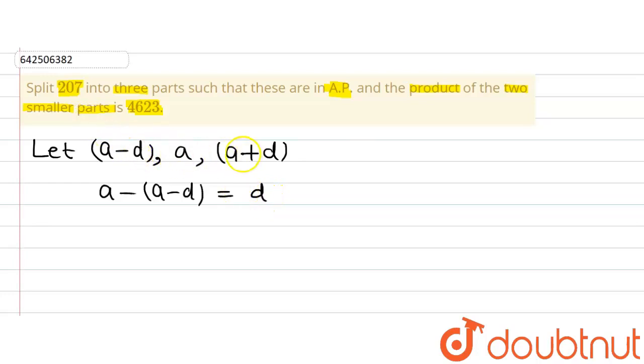Now, these are the three terms in which we have assumed that 207 has been split and these are in AP. Now, let's follow the question.